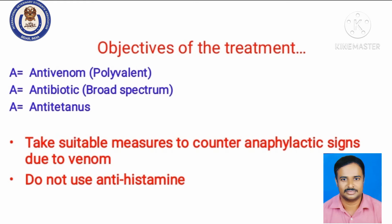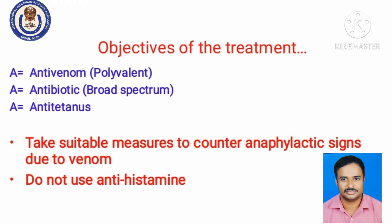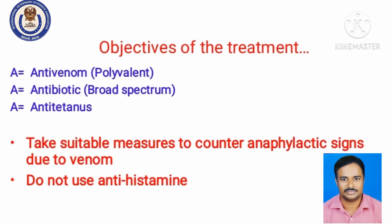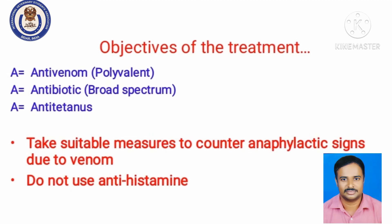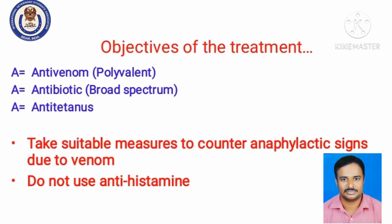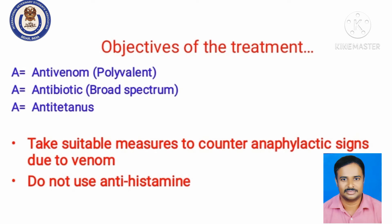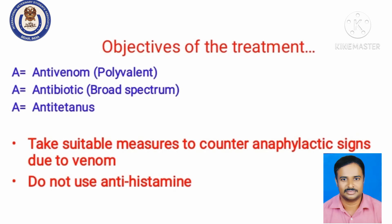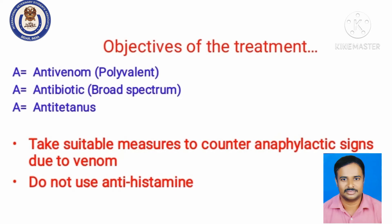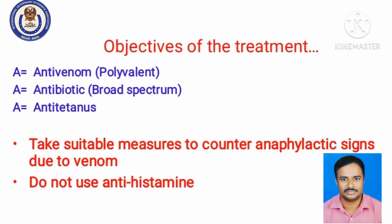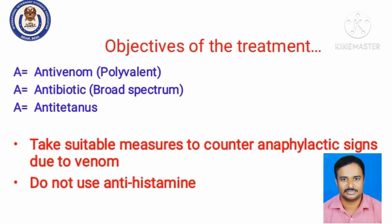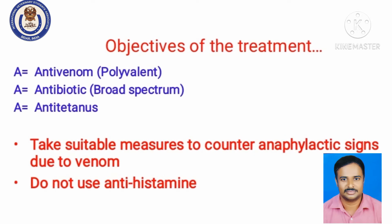Coming to the objectives of treatment, there are three A's to follow. The first is anti-venom therapy — most commonly polyvalent anti-venom is used in clinical practice. Next is antibiotic therapy, and anti-tetanus serum. Do not use antihistamines — they will further aggravate the condition, acting as a CNS depressant, worsening the animal's status.